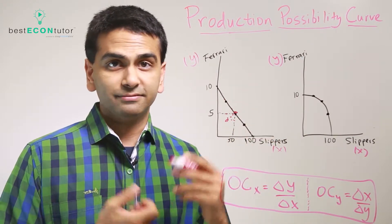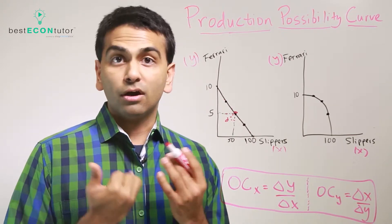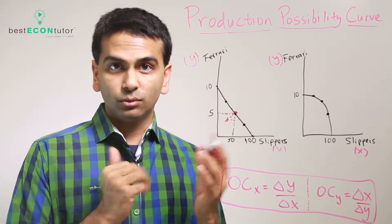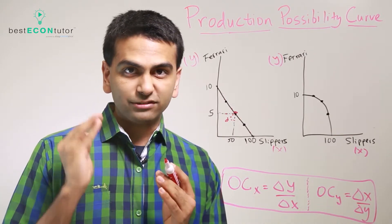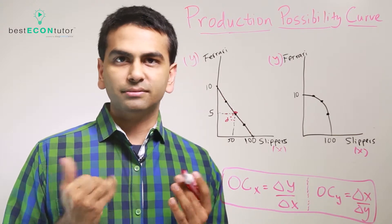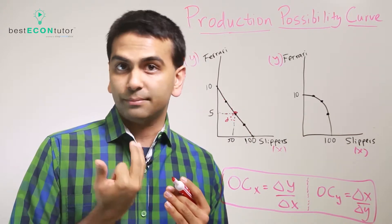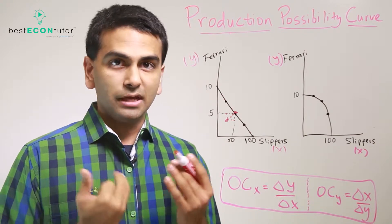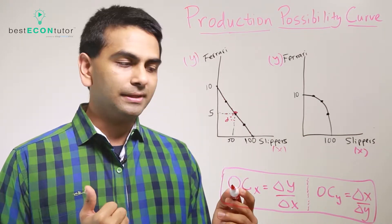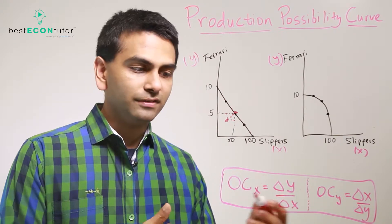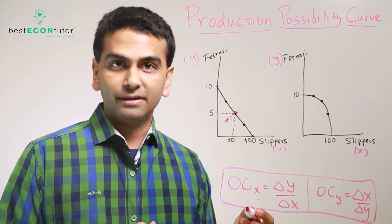Anywhere outside the PPF is simply impossible to produce. Now, how do we relate opportunity cost to production possibilities curves? Remember, it's the value of the next best alternative — but how do you measure cost in a world without currency? It's going to be in terms of the other good, the good you're giving up, the good you're not producing anymore. So here, what's the cost of making a Ferrari?